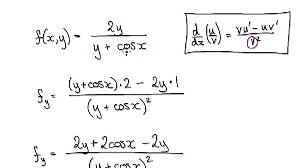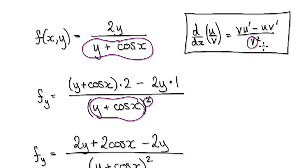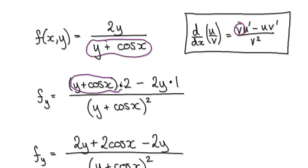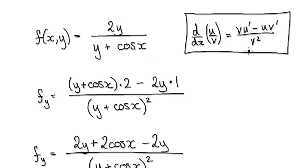Using the quotient rule: square the bottom, which gives us this. Leave the V alone and differentiate the top — that gives two, since y is our variable. Then minus, leave the U alone and differentiate the bottom.